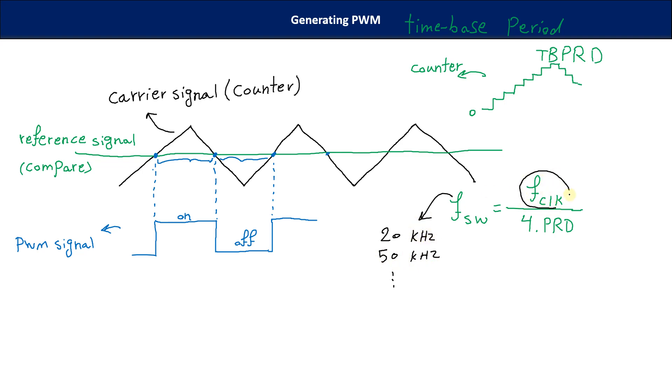But what is the clock frequency? It's about our DSP. It's about our launch pad. In our DSP, which is 28359D, we've got 200 megahertz. So, it could be 200 megahertz. And what is remained is our PRD.